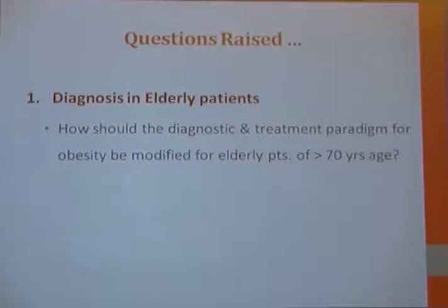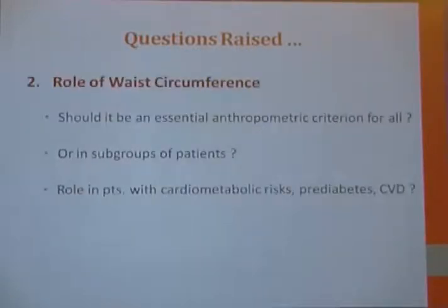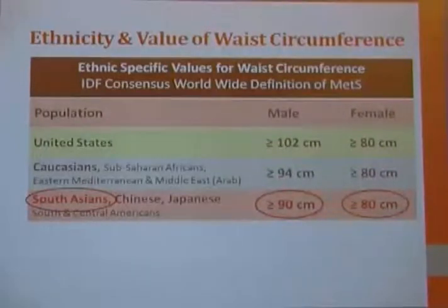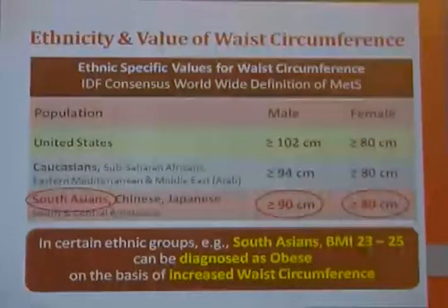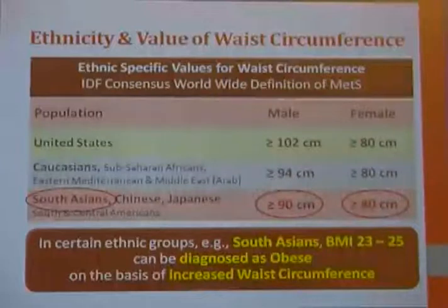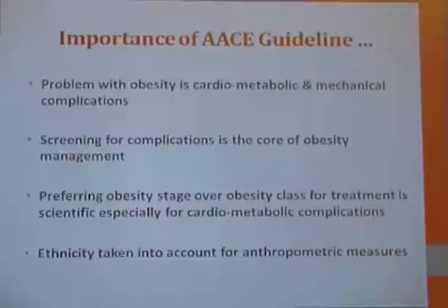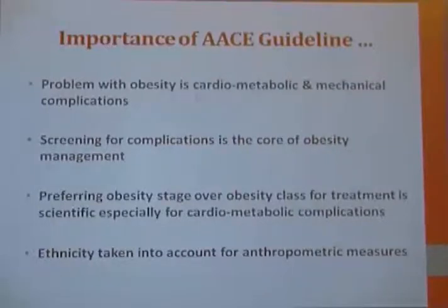Diagnosis in elderly patients has been raised as a question — what should the treatment and diagnostic paradigm be for persons over 70 years who are sarcopenic? The role of waist circumference is discussed — should it be an essential anthropometric criterion for all or only for subgroups like South Asians? For South Asians, more than 90 cm for males and more than 80 cm for females is very important, as we are sarcopenic and develop diabetes at lower BMI. When BMI is 23–25, South Asians can be diagnosed as obese based on increased waist circumference. The importance of the AAC guideline is that obesity complications are cardiometabolic and mechanical, and ethnicity has been taken into account for anthropometric measurements.